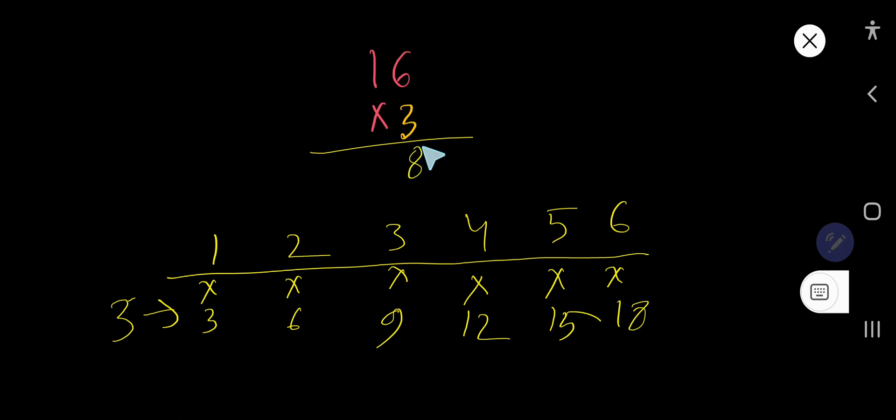3 times 6 is 18. Write 8 and carry 1. So 3 times 1 is 3, plus 1 is 4. That is, 16 times 3 gives us 48, and this is the answer.